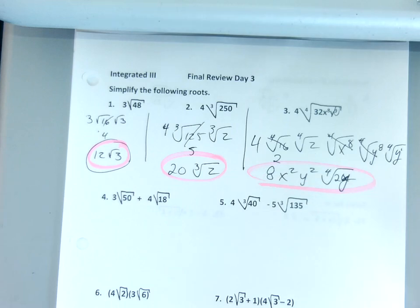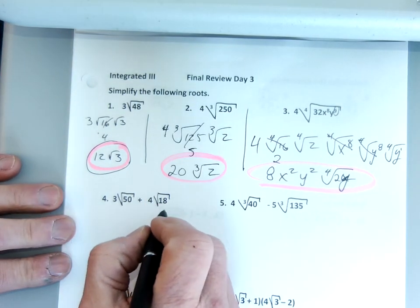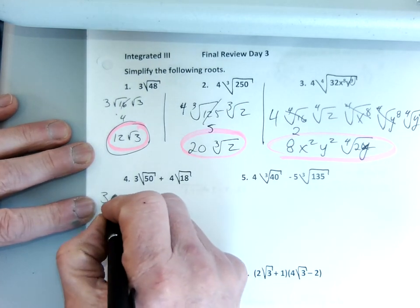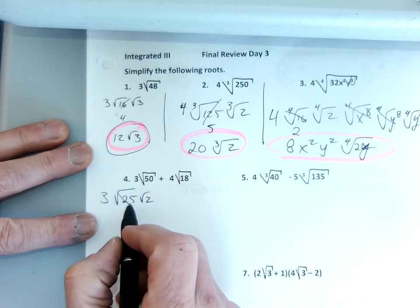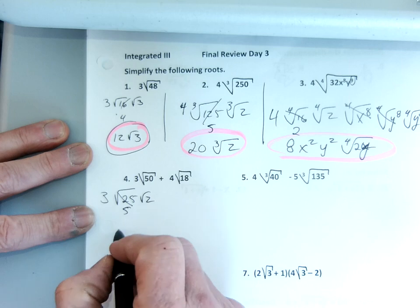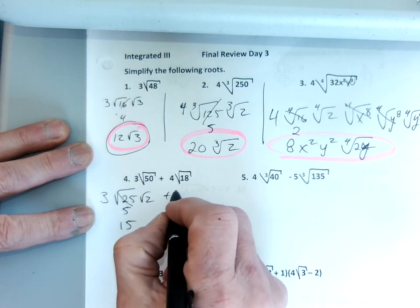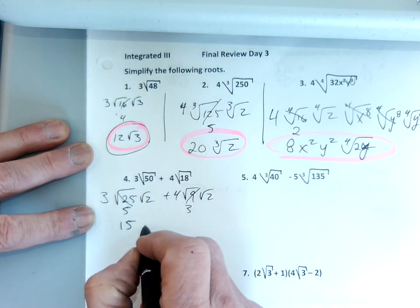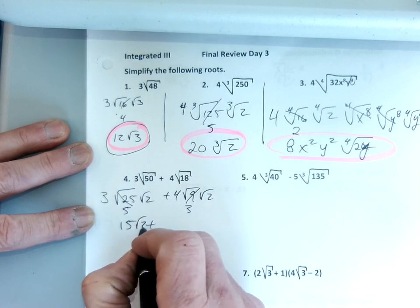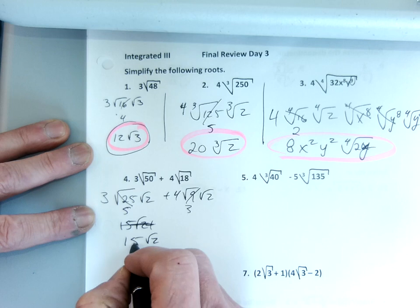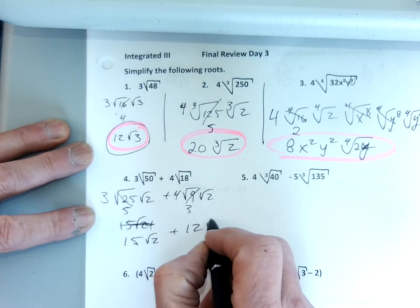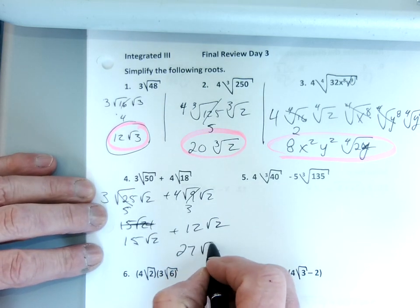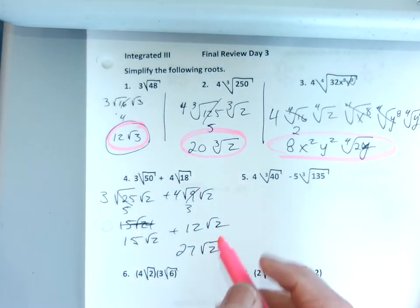Number four: I can't add them if they're not the same, but maybe if I do a little reducing they might become the same. I'm going to keep the 3 out there, and then 50 I'll change into 25 times 2 because that's a perfect root. Square root of 25 is 5, and 5 times 3 is 15. Plus 4, and I've got 18 — I'll go 9 times 2 because 9 is the perfect root. I've got 3 times 4 is 12. So it's 15 square root of 2 plus 12 square root of 2, which makes 27 square root of 2.